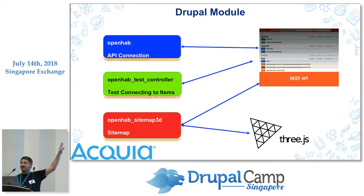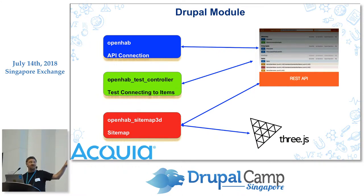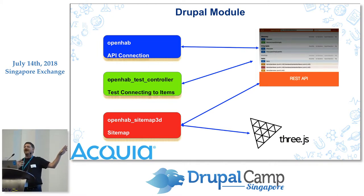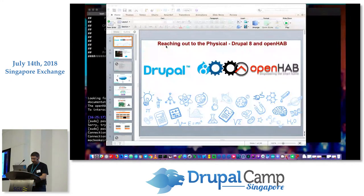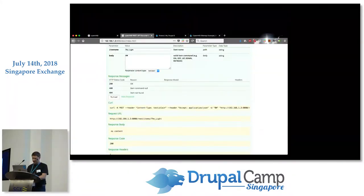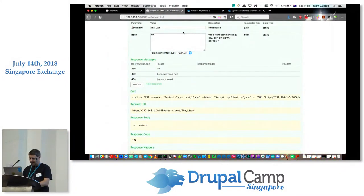You can see here that all three modules basically connect through the REST API. The sitemap module is also — and it's very experimental at this stage — using a JavaScript library called Three.js, which renders a 3D representation of the sitemap.